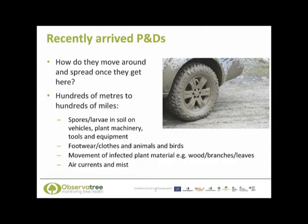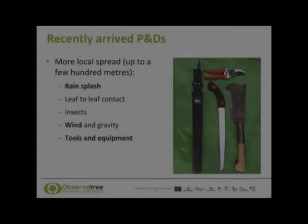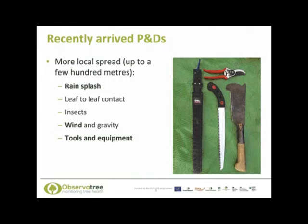Some pest and diseases spread on air currents and in mist. Local spread of pest and diseases up to a few hundred metres is possible by rain splash, leaf to leaf contact, the movement of insects, wind and even gravity, and very importantly tools and equipment.